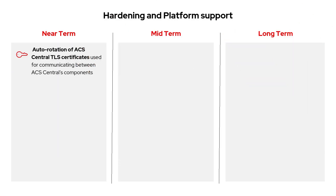On to hardening and platform support. In the near term, ACS will automate the rotation of internal TLS certificates used for secure communication between components. This removes the need for manual renewals, making it much easier for customers managing many secured clusters. It also addresses compliance and operational pain points highlighted by customer feedback.